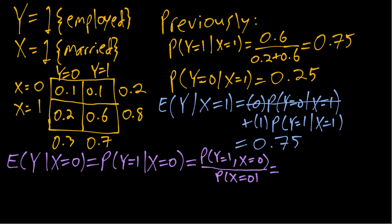The numerator we can read directly from the table. That's the probability that an individual is both unmarried and employed, which is 10% of the full population, so we'll have 0.1 in the numerator.